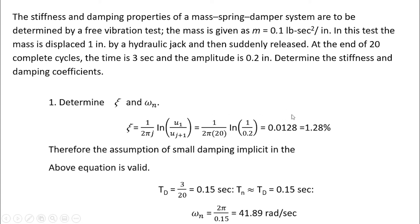The result is ζ = 0.0128, or 1.28%. This is very small damping, which validates our assumption that damping is small for the approximate formula. If the damping were not small, we would need to use the exact formula.